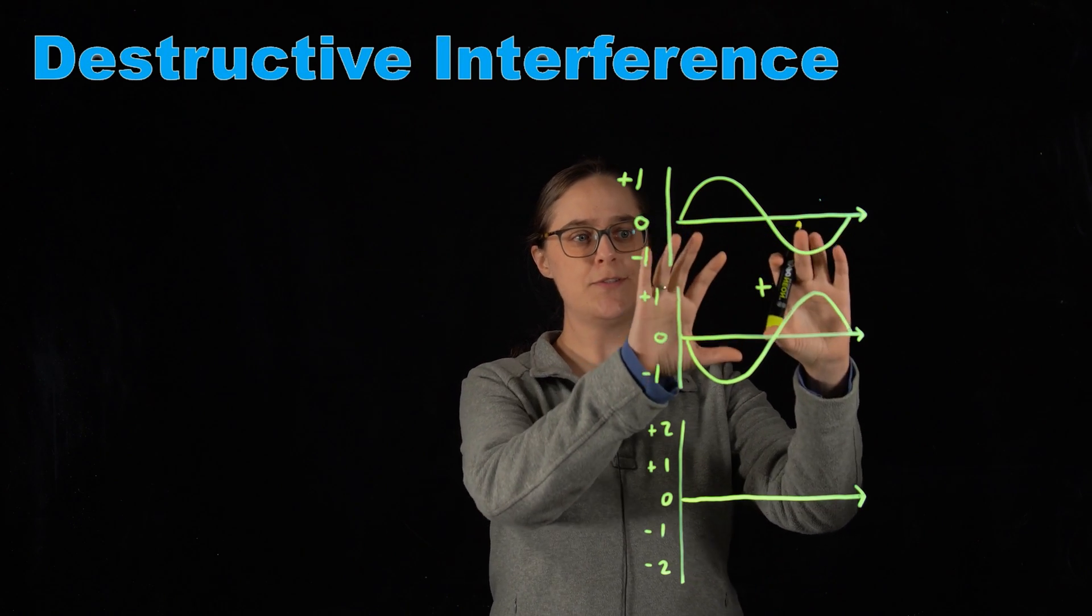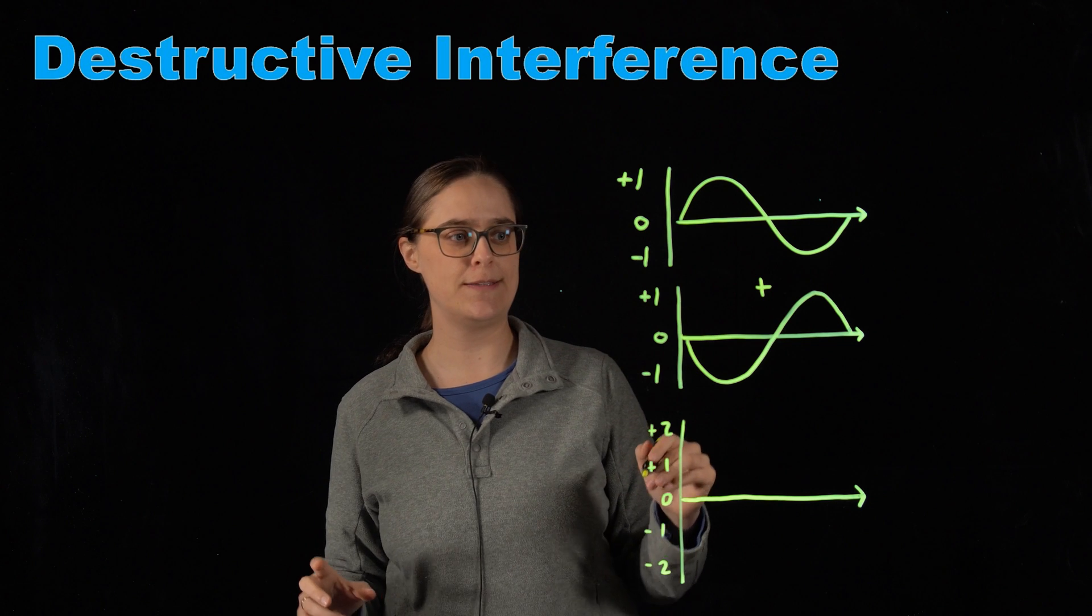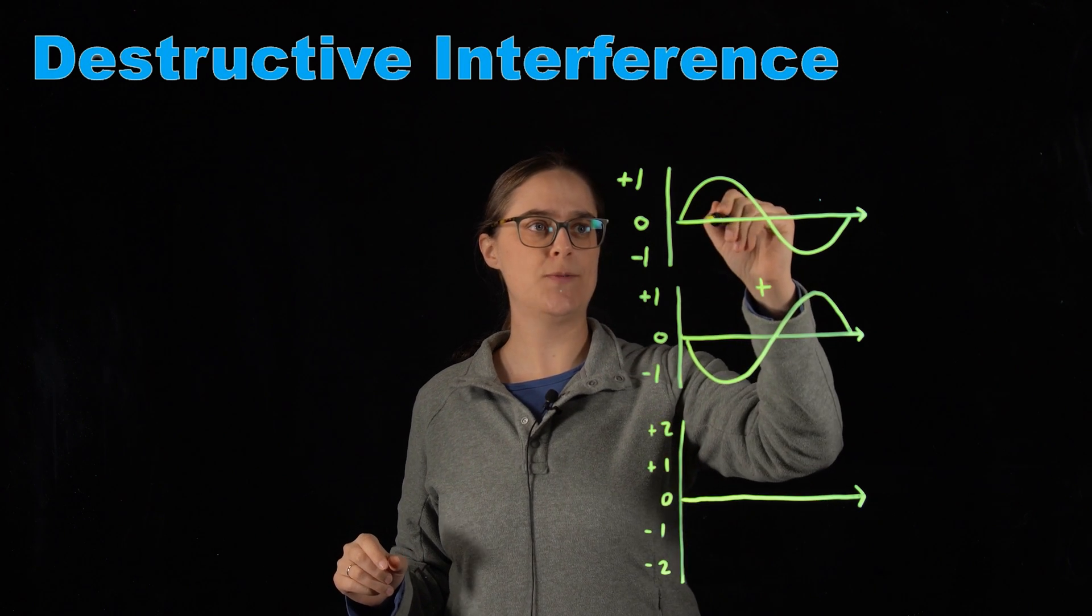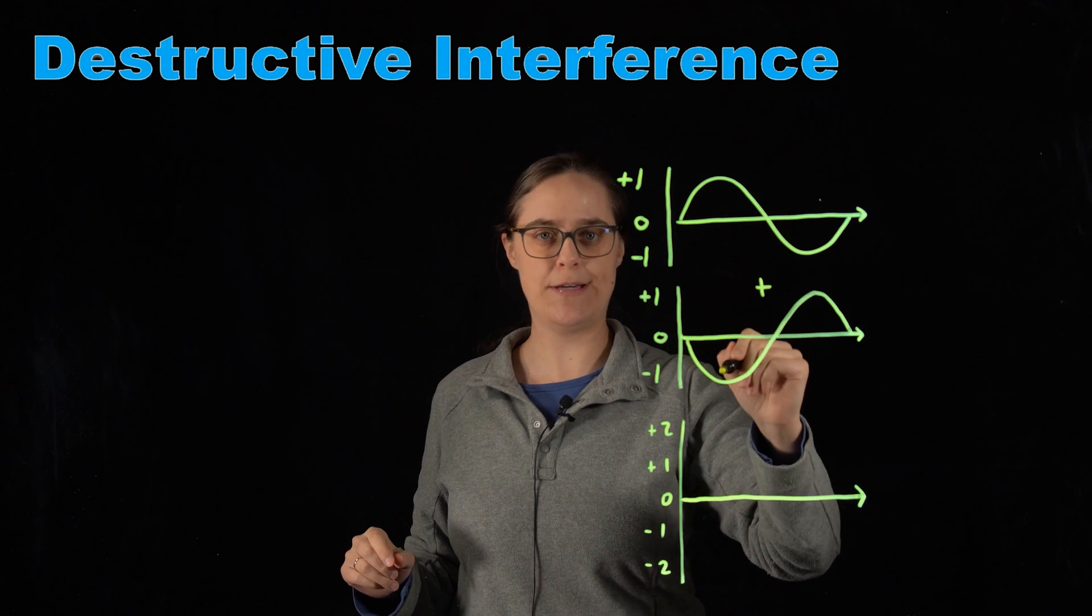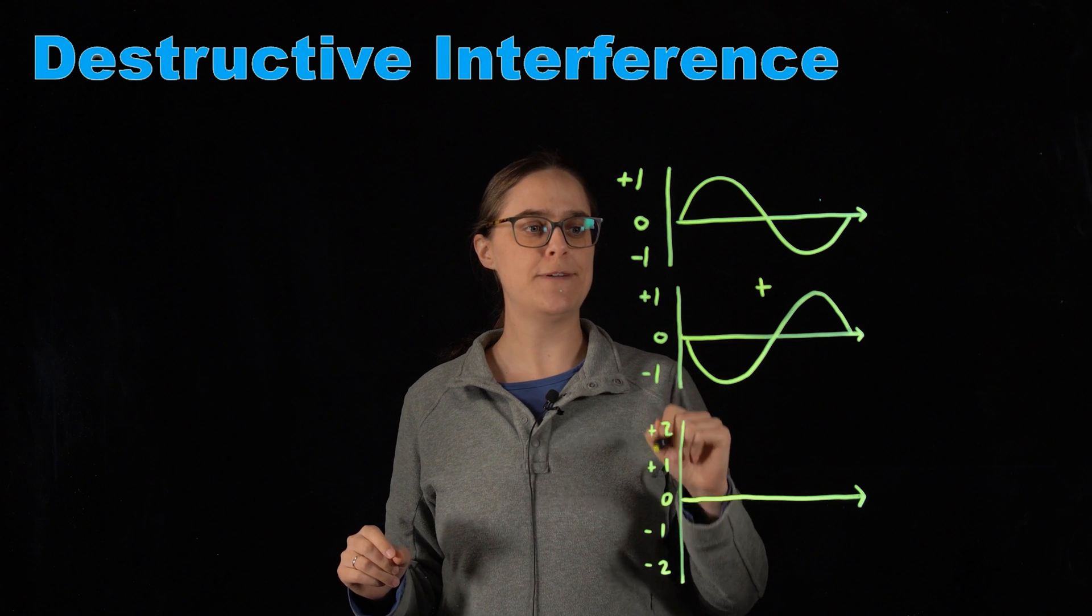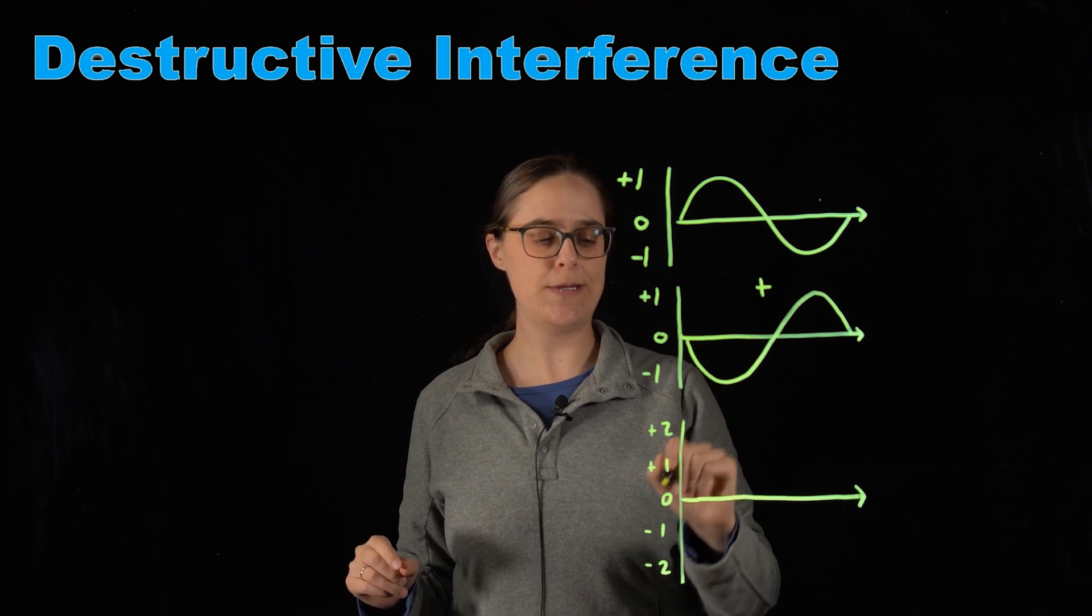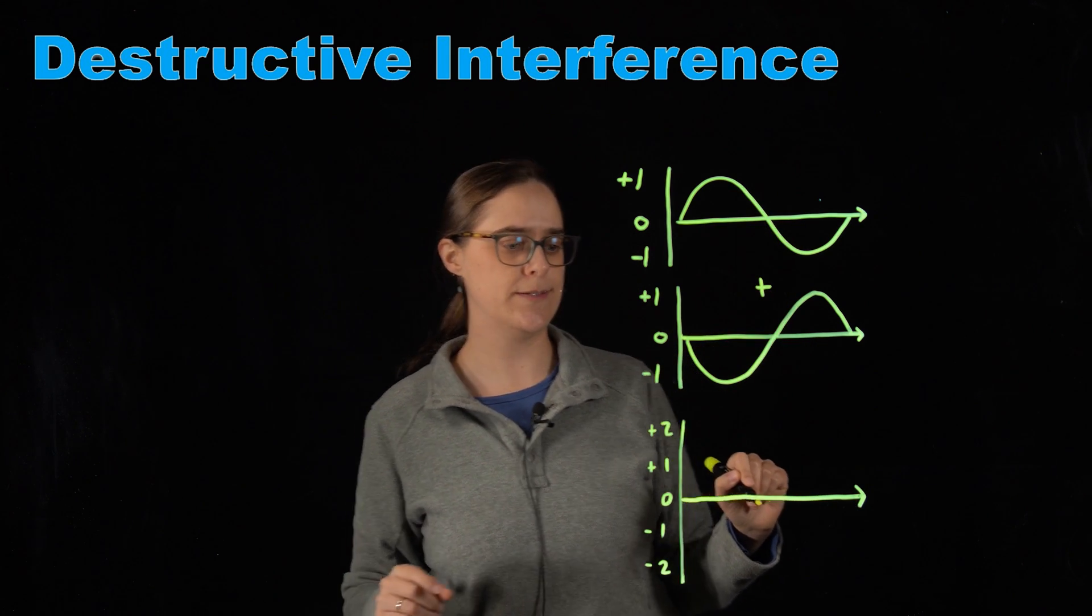But this time these two waves are out of phase. What I mean by that is when one has a peak, the other has a valley. Let's find the sum of these two waves at main points along these lines.